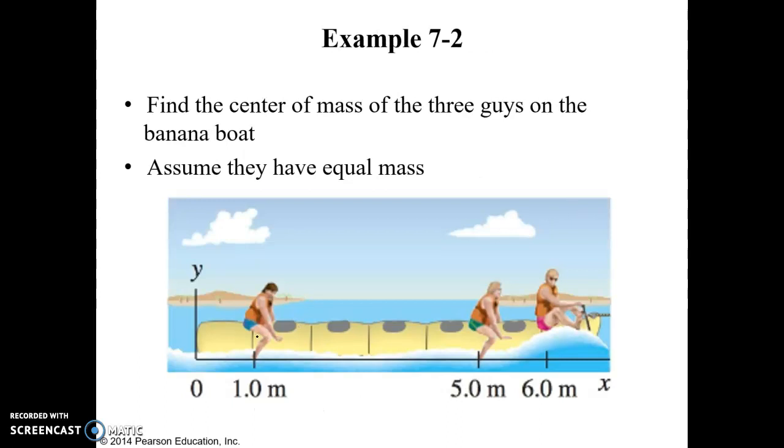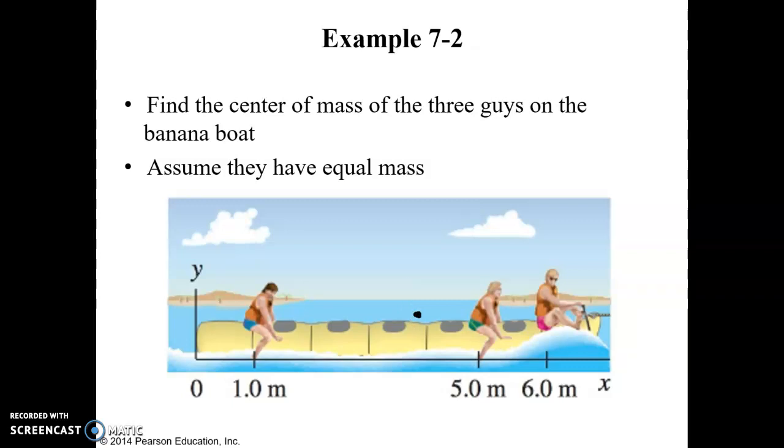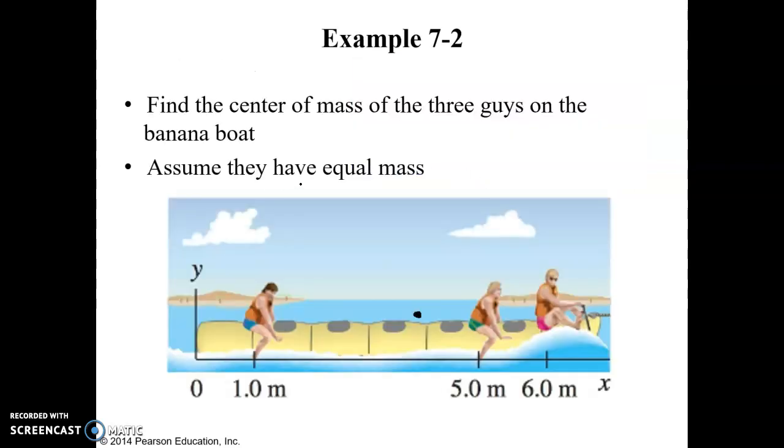Here's an example where we have a family on a banana boat. And we want to know where is the center of mass. So we have these two sitting up near the front and this one way at the back. Where is the center of mass going to be? We could guess that it's probably going to be around here somewhere. But we want to find out specifically where it is and we can calculate that. So if we use the tail end of this boat as the reference and also in the problem statement, we're going to assume that they all have equal mass.